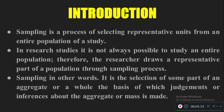Sampling is the process of selecting representative units from an entire population of your study. In our olden days, when our grandmothers cooked rice, to check whether the rice was boiled or not, they used to take a small grain of rice, press it, and check whether it was completely boiled. When one grain was boiled, they came to a generalization that the whole rice in the pot was boiled. This ancient knowledge is the basis of population and sampling.